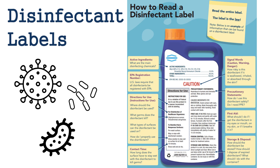This slide demonstrates how to read a disinfectant label. You should read the entire label — remember, the label is the law. First on the list is active ingredients, which tells you what the main disinfecting chemicals within the product are. Next is the EPA registration number; U.S. laws require that all disinfectants be registered with the EPA. Directions for use, or instructions for use, tell you where the disinfectant should be used, what germs it kills, what types of surfaces it can be used on, and how to properly use the disinfectant.